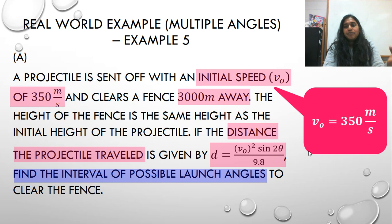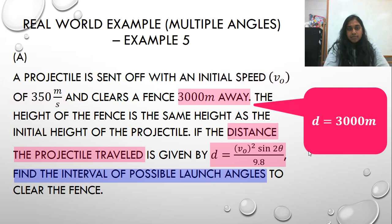Right. So let's interpret that. V0, the initial speed, is literally equal to 350 meters per second. So that's something important to write down for myself. D is equal to 3,000 meters. Okay. So again, important to write down.